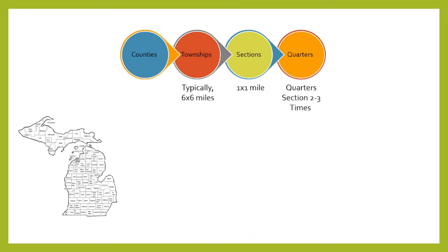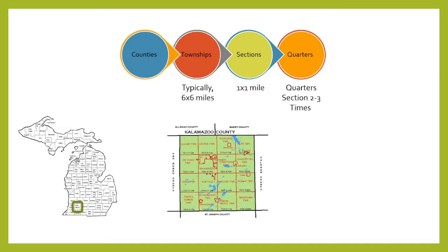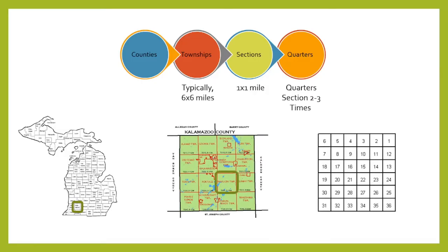For example, within the state of Michigan lies Kalamazoo County, where Pavilion Township can be found, which contains 36 sections.